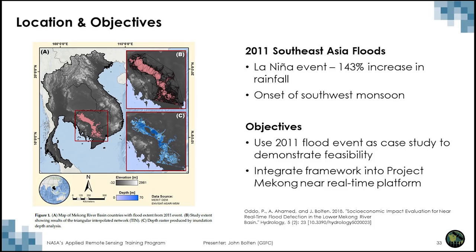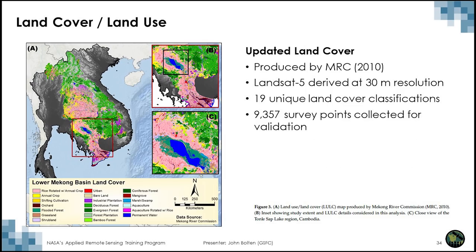This shows the 2011 Southeast Asia floods case study. This was a La Niña event with over 143% increase in rainfall at the onset of the southwest monsoon, causing a very widespread flood in Thailand. We used this to demonstrate the utility of our near-real-time flood damage assessment system, as described in detail in a paper by Perry Otto in 2018 in the Journal of Hydrology. We also used the updated land cover product led by Joe Spruce published in 2019.